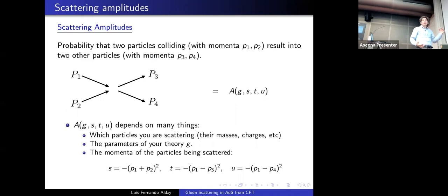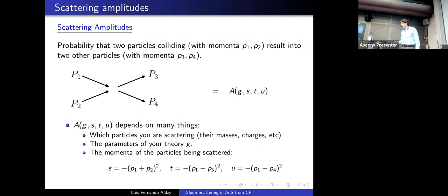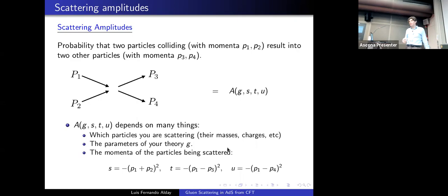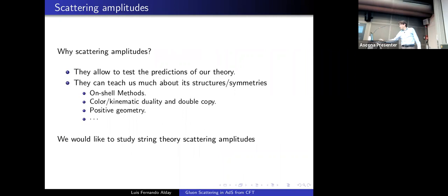A four-point scattering amplitude is the probability that two particles colliding with momenta p1 and p2 result into two other particles with momenta p3 and p4. The scattering amplitude, denoted by A, can depend on which particles you are scattering, their masses, charges, the parameters of your theory collectively denoted by g, and the momenta of the particles through the Mandelstam variables s, t, and u.